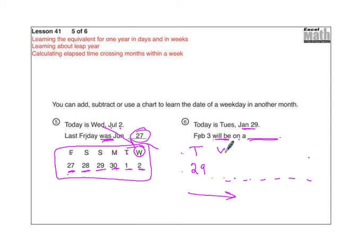Alright, that's Tuesday. We go to Wednesday, which is the 30th. Thursday is the 31st because there are 31 days in January. Friday is the 1st. Saturday the 2nd. And Sunday will be February the 3rd. So the answer is a Sunday. Alright, that's it. Thanks for watching.